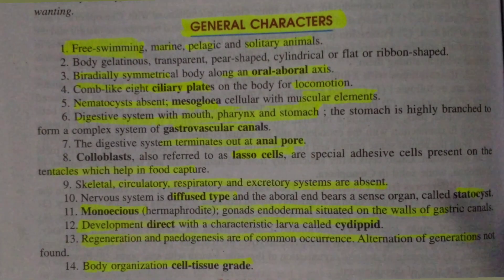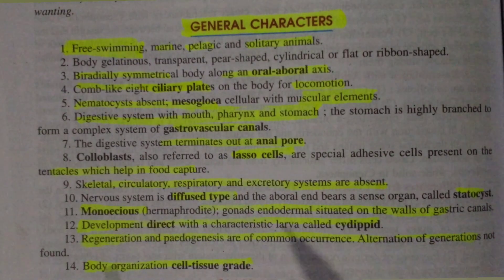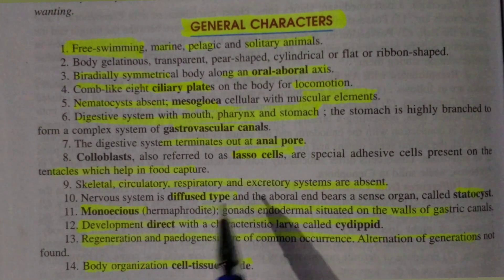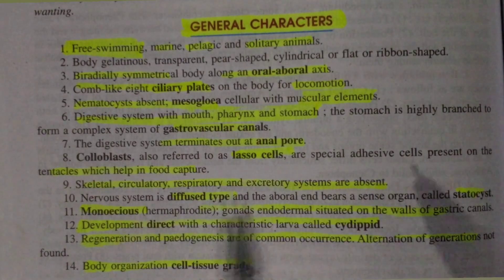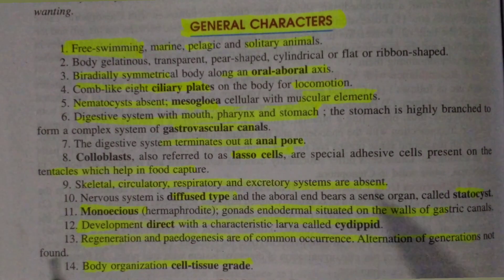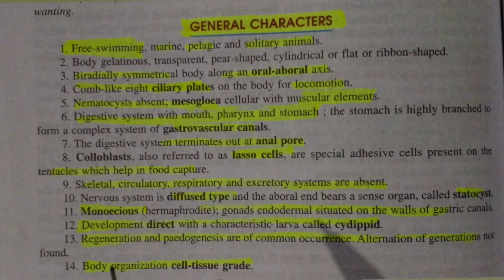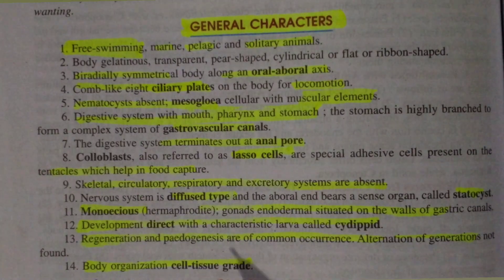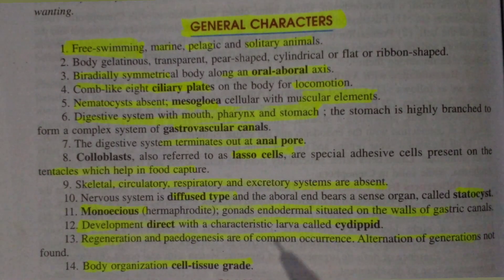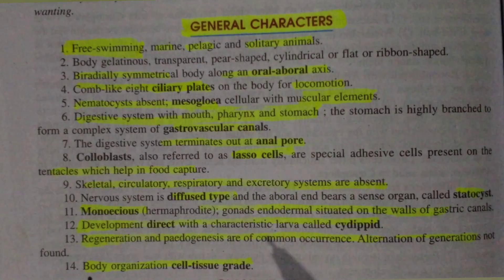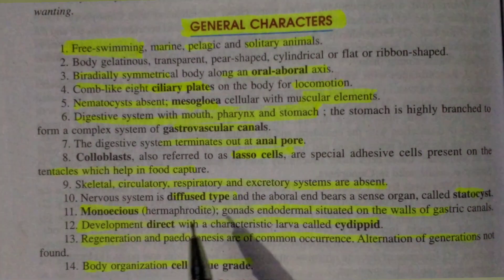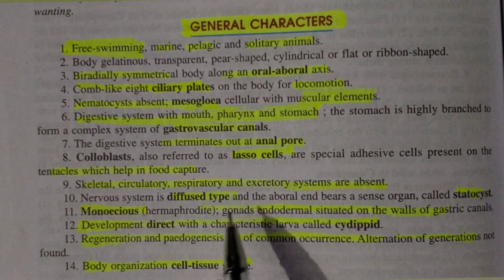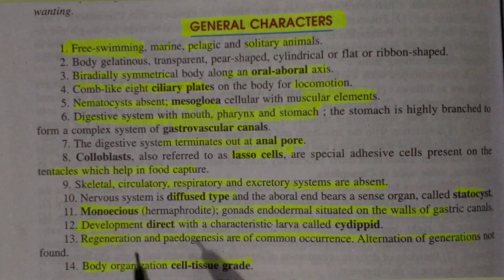Skeletal (kankal), circulatory (sambharan), respiratory (shwasan), and excretory (utsarjan) systems are all absent in Ctenophora. Always keep in mind that in the minor phylum Ctenophora, these four systems are not present.